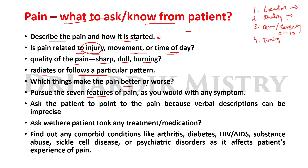Fourth, timing: when did it start, how long does it last, and how often does it come? Understanding timing is an important feature of the symptom. Fifth, onset: how has the symptom progressed? Sixth, remitting or accelerating factors: what relieves the symptom or makes it worse?